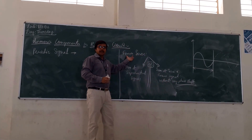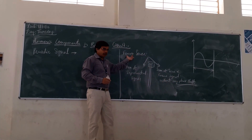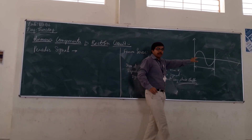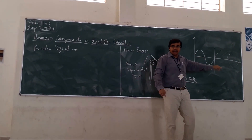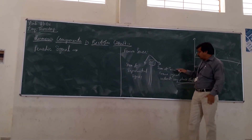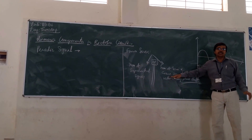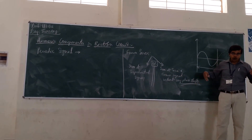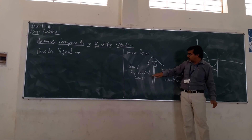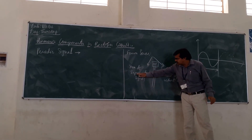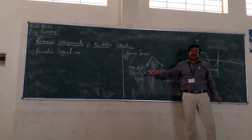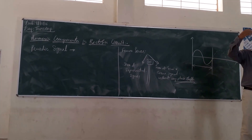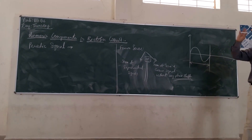The Fourier series is the method of decomposing any periodic signal into a sum of sine and cosine signals, or decomposing it into a sum of exponential signals. This applies to any periodic signal.